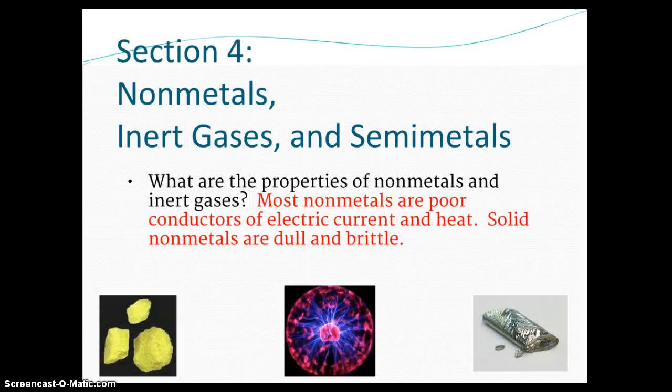The properties of nonmetals and inert gases are that they're just the exact opposite of the metals. They're poor conductors of electrical current and heat. Solid nonmetals are usually dull and brittle. Take a look at that picture right there. They're usually very dull, very brittle, like sulfur.